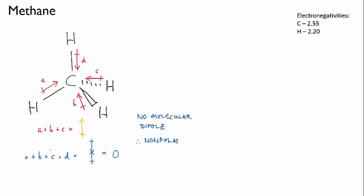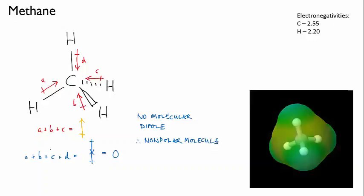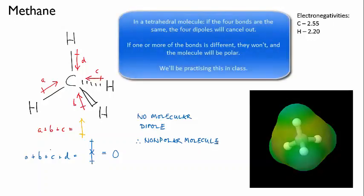This is a good shortcut to keep in mind. In a tetrahedral molecule, if the dipoles are all the same magnitude, they will cancel out. If they are not all the same magnitude, you may need to think more carefully about how they will sum, but you can usually make a fairly good estimate without getting too involved in the trigonometry.